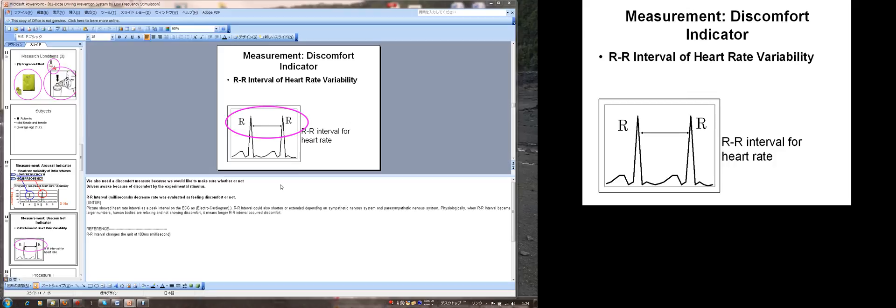We also need a discomfort measure because we would like to make sure whether or not the drivers awake are the discomfort because of the discomfort by their experimental stimulus. RR interval as milliseconds decreased rate was evaluated as a feeling of discomfort or not. Picture showed a heart rate interval as a peak interval on the ECG as electrocardiogram. RR interval could also be shortened or extended depending on the sympathetic nervous system and the parasympathetic nervous systems. Physiologically, when RR interval become larger numbers, human bodies are relaxing and not showing discomfort.